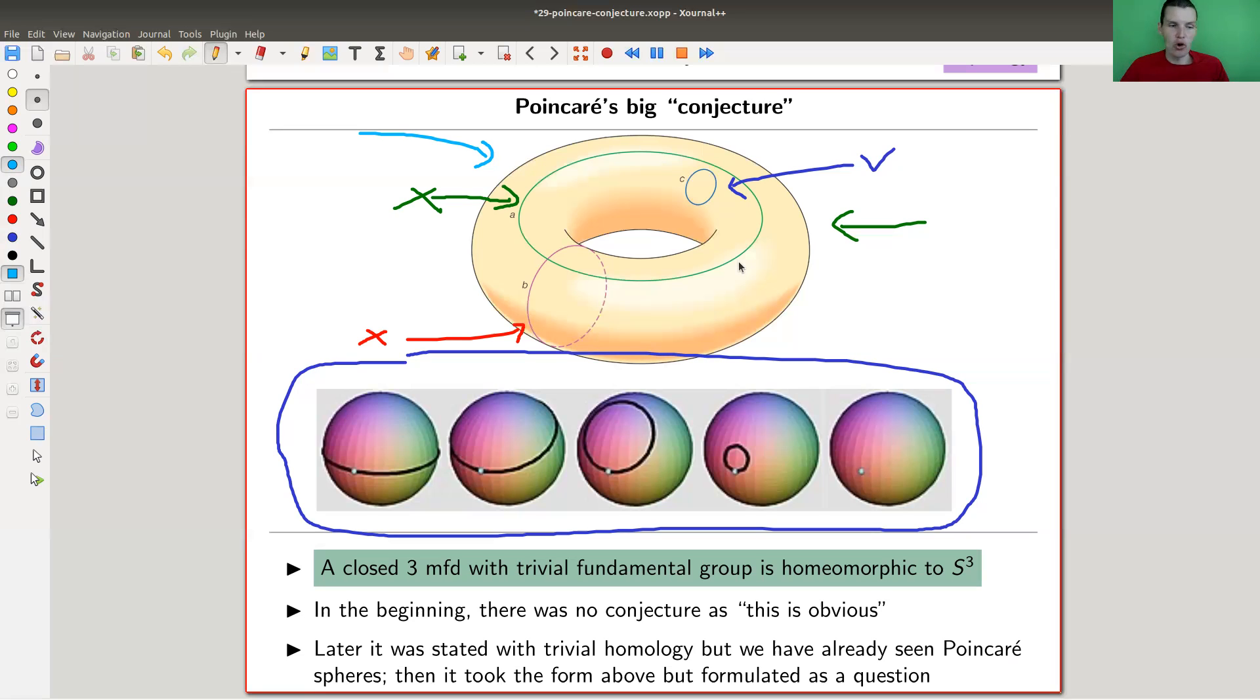As soon as you have a torus, you can put one of the non-trivial loops around it. For two dimensions this was well known. Poincaré conjectured it for three dimensions. Or to be completely precise, in the beginning there were five papers.